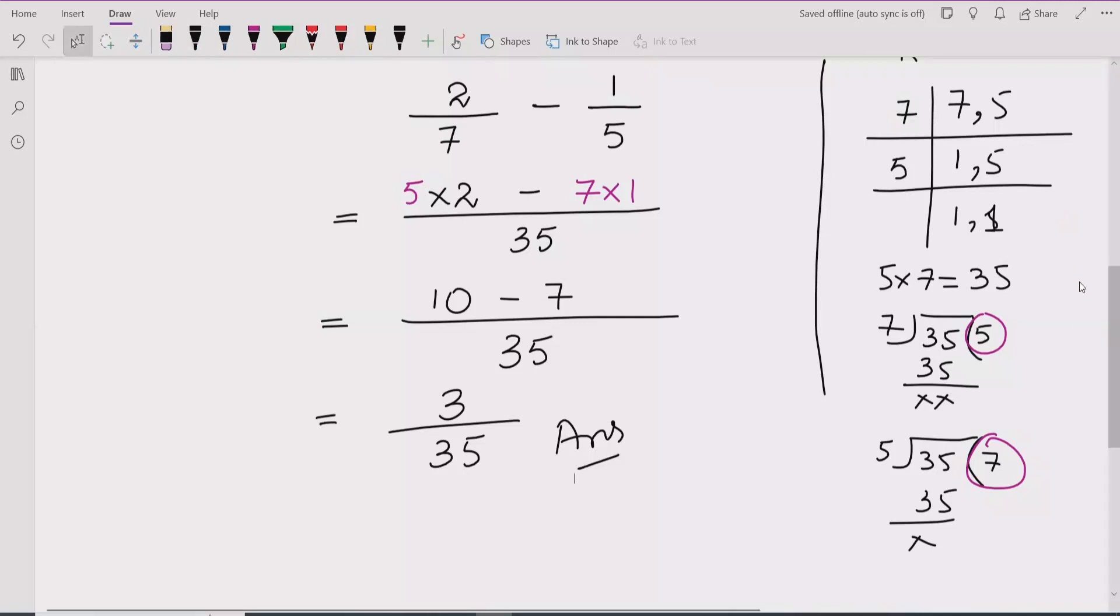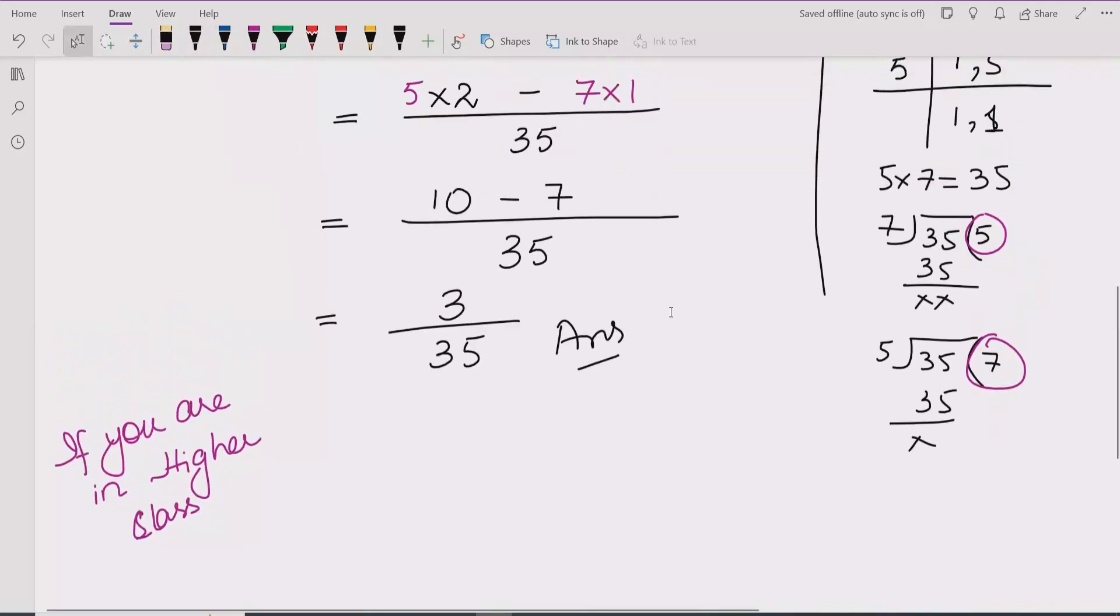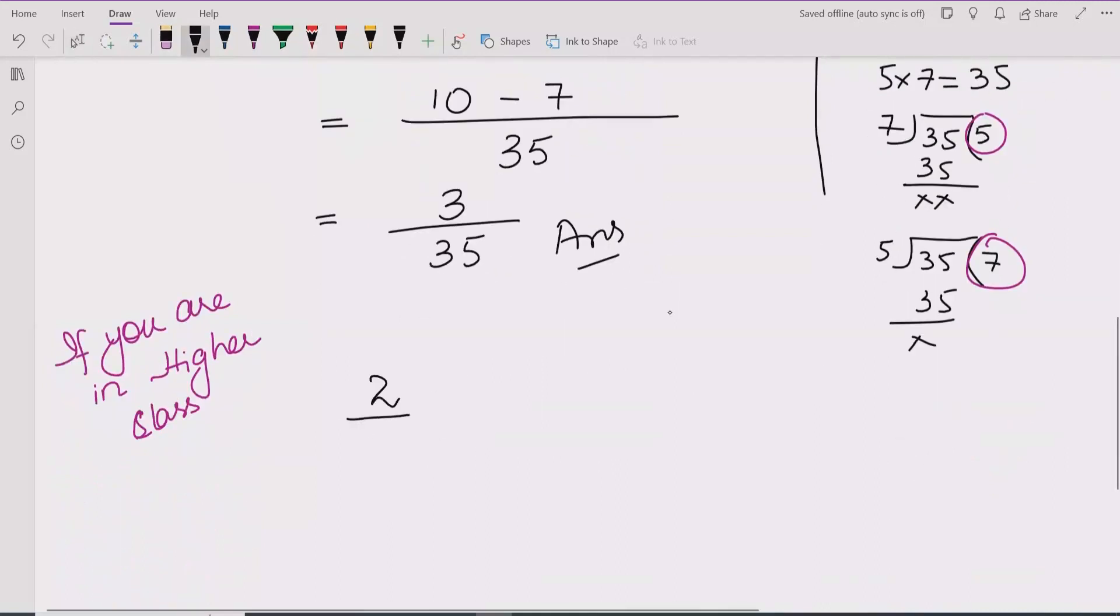But if you are in a senior class or you are in a higher class, so you can use this method. Like here we have the question is 2 upon 7 minus 1 upon 5.